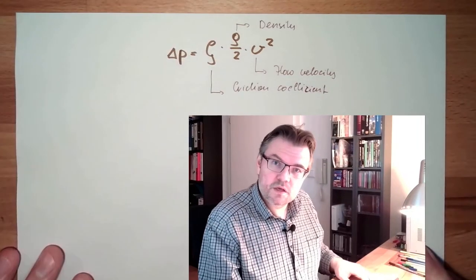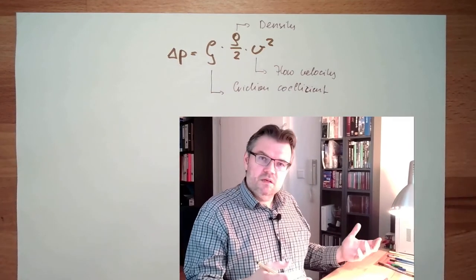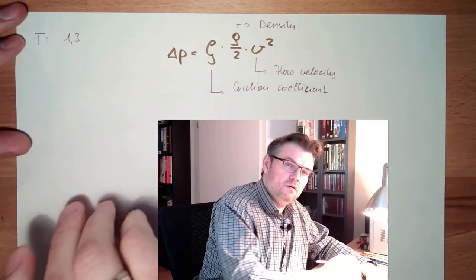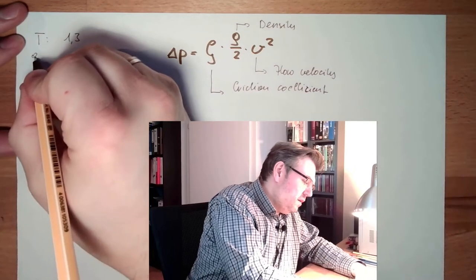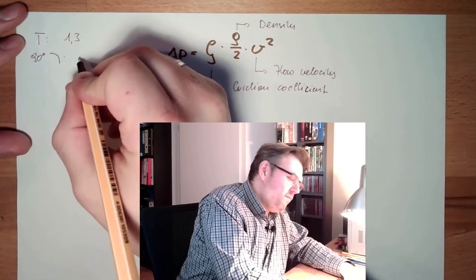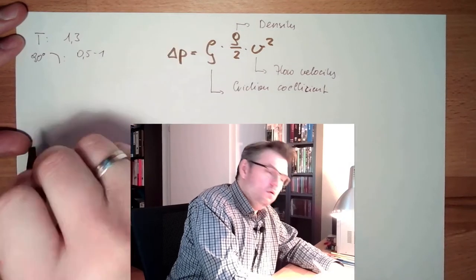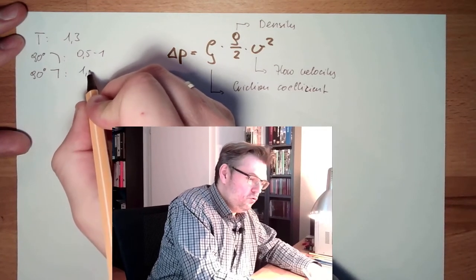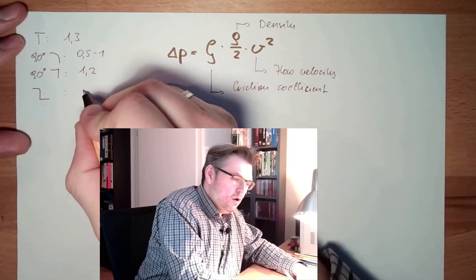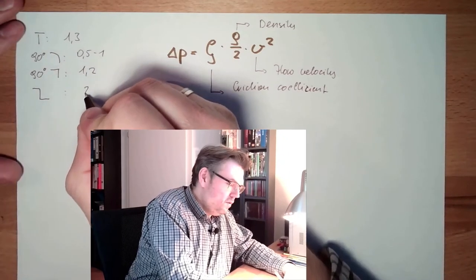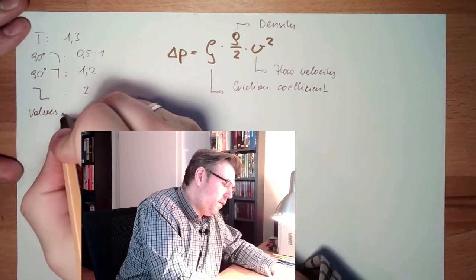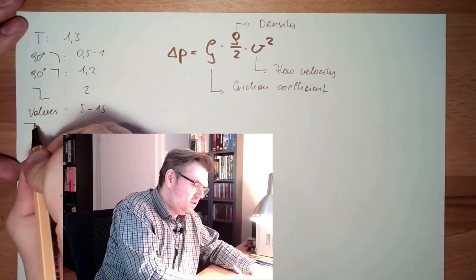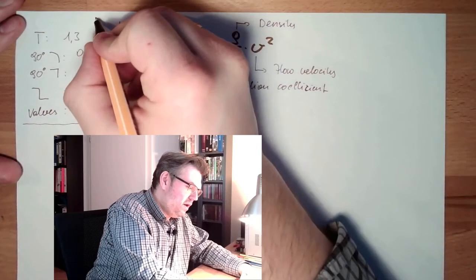This friction coefficient — the zeta value — depends on how the fitting is formed. If there is a T-piece, the friction coefficient is around 1.3. If there is a gentle 90-degree bend, it's around 0.5 to 1. If there is a 90-degree sharp edge, it's around 1.2. And for valves, depending on the internal design, we are somewhere between 5 to 15. These values are written in the database — these are my zeta values.